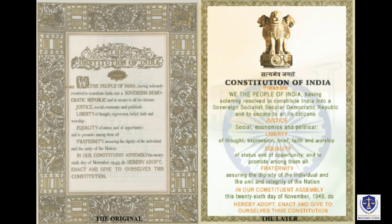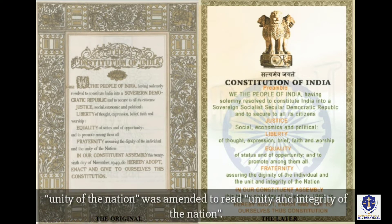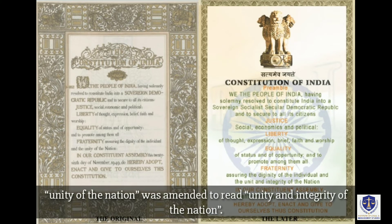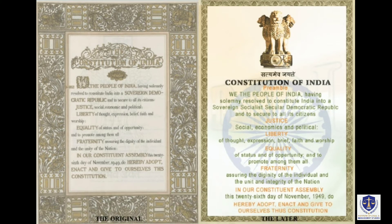The words socialist and secular were added to the preamble by the 42nd Amendment Act 1976. Also, unity of the nation was amended to read unity and integrity of the nation.